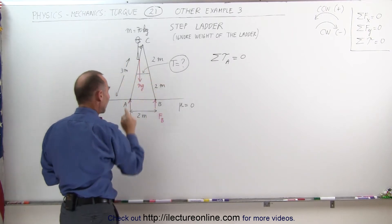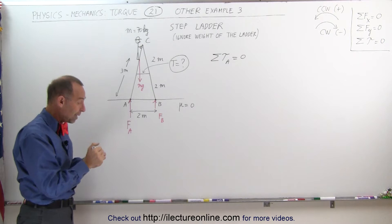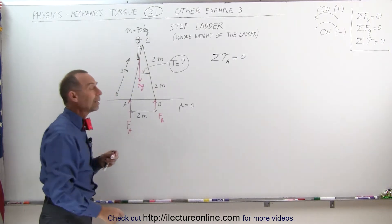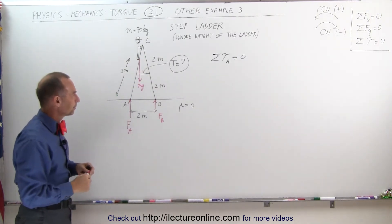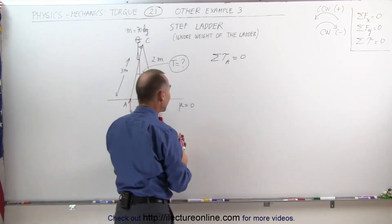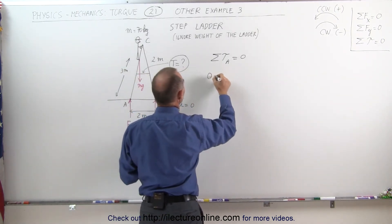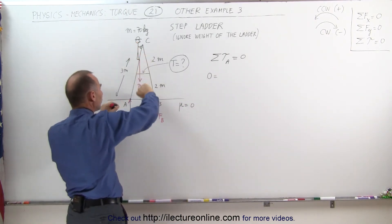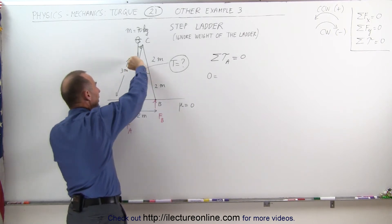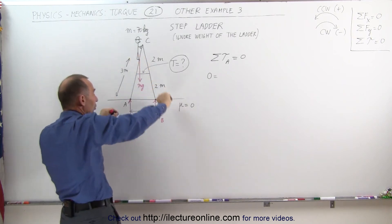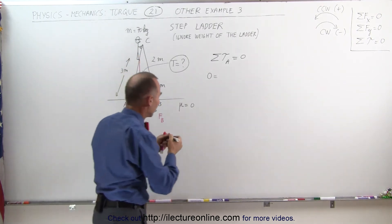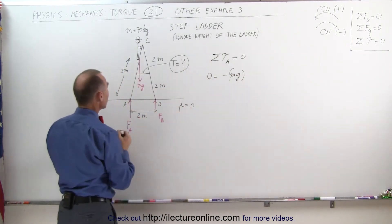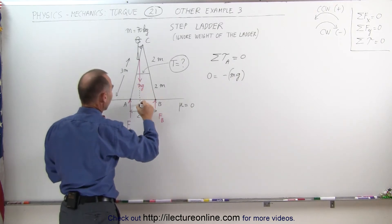Since a person is standing on this side of the ladder, the force at A is bigger than the force at B. But the two together — F_A plus F_B — should add up to the weight of the person, ignoring the weight of the ladder. The sum of all the torques about point A equals zero. First, the torque caused by the person would be a negative clockwise torque, because it would cause the ladder to move in that direction — minus the weight of the person MG times the perpendicular distance from the point of rotation to the line of action of the force.